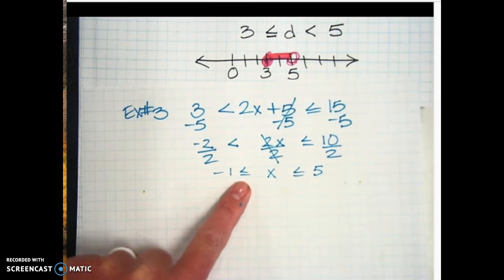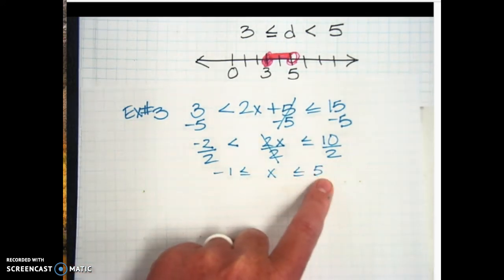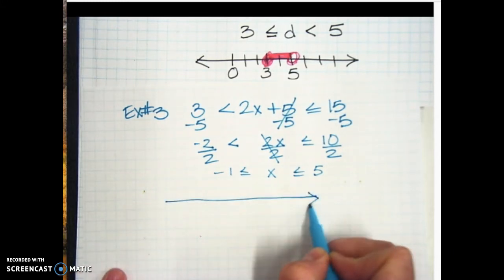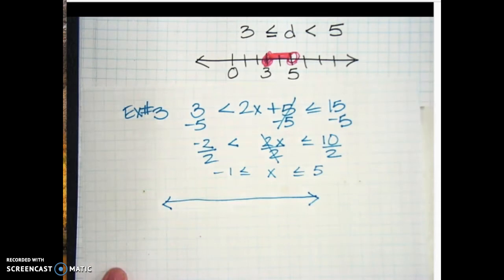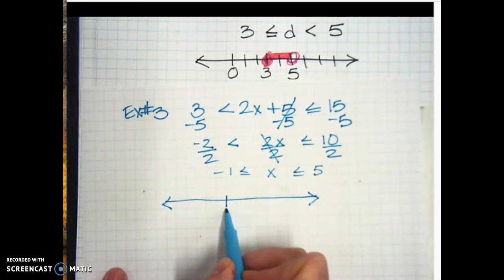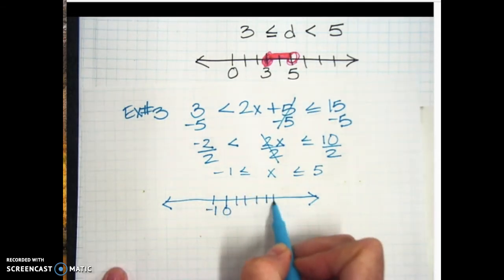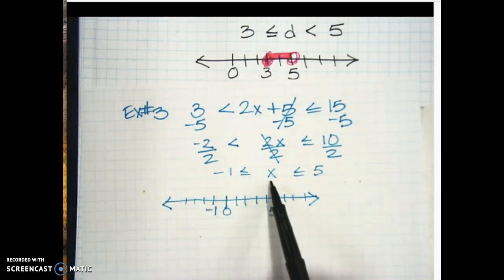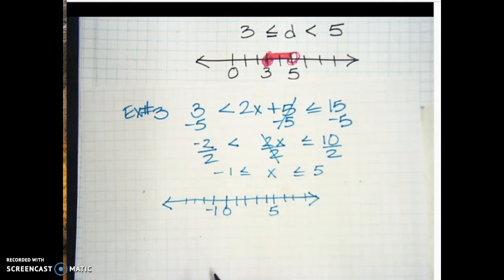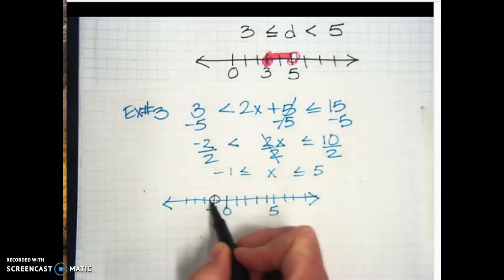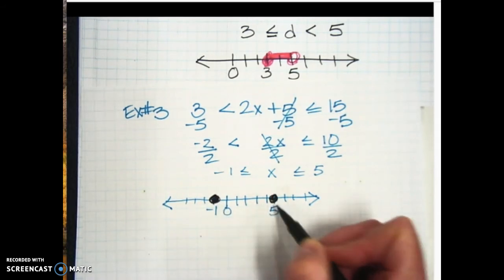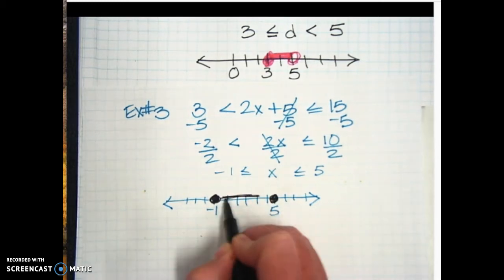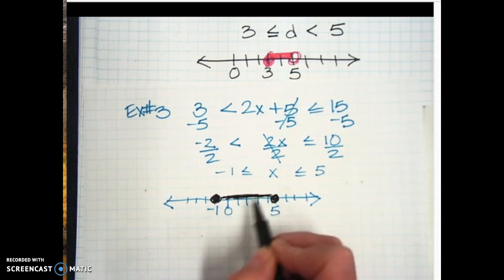The result is negative one less than or equal to X less than or equal to five, which is good for graphing since the larger number is on the right. Put zero on the number line; negative one is to the left, positive five to the right. X is greater than or equal to negative one AND X is less than or equal to five — both have equal signs, so both circles are closed. Shade in between. This is a conjunction.